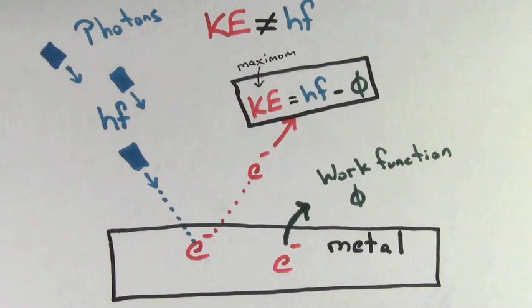For example, say the work function of this metal was two electron volts. If the photons hitting the metal carry an energy of six electron volts, that means the electrons will come out with a maximum kinetic energy of four electron volts.